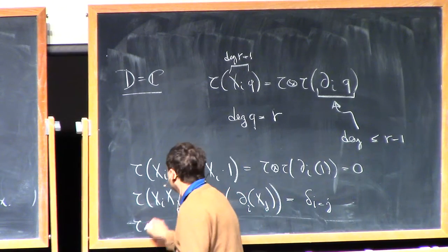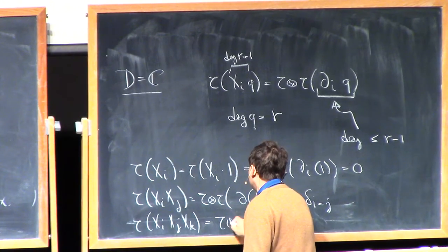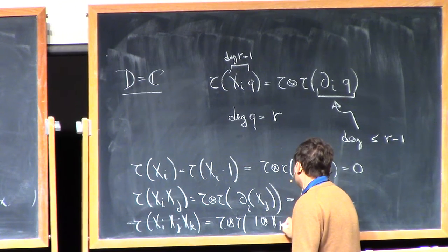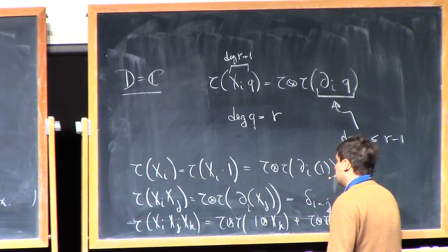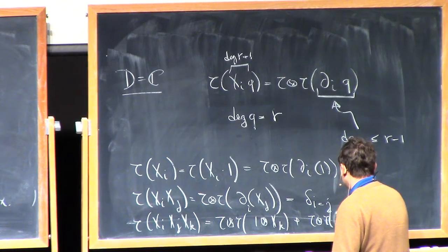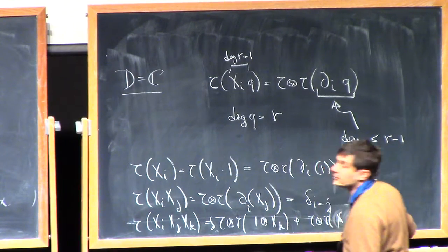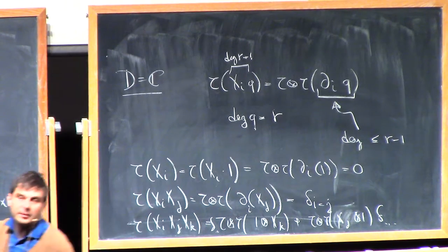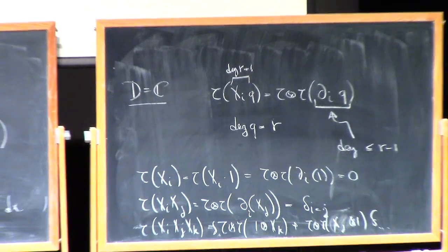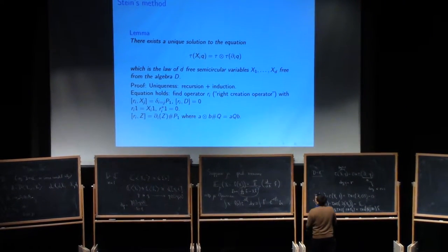If I want the cubic one, you'll see that this is tau tensor tau of something like one tensor x_k plus x_j tensor 1, decorated with some delta functions. This involves monomials of shorter degree, so you keep on going and you'll be able to get everything. Uniqueness is just some induction and recursion.